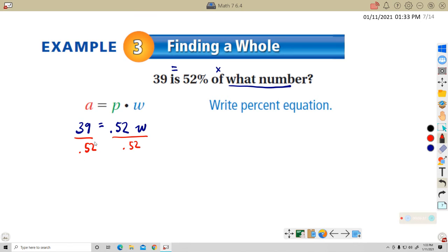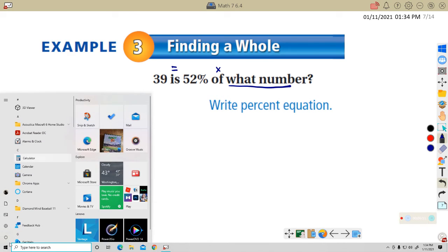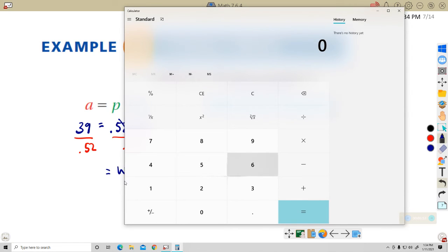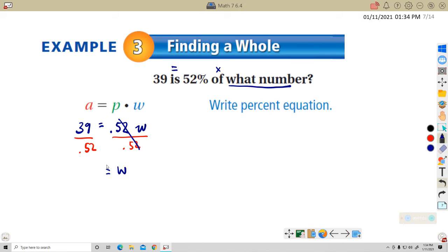If I'm going to divide by a number smaller than one, by a fraction essentially, this should come up bigger than 39, which is kind of what we're looking for. These will cancel. So 39 divided by 0.52 equals 75. So 75 is the whole.